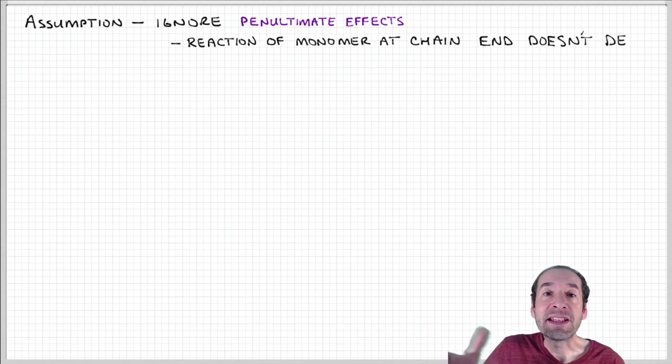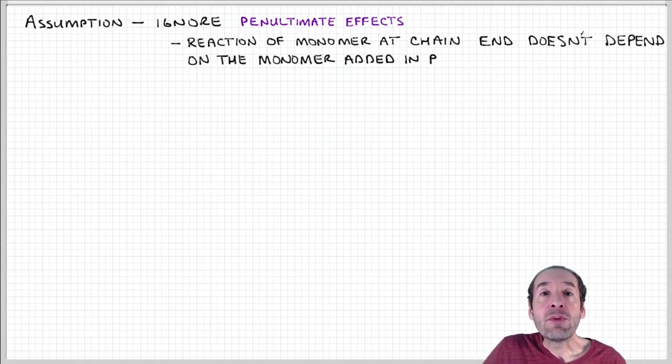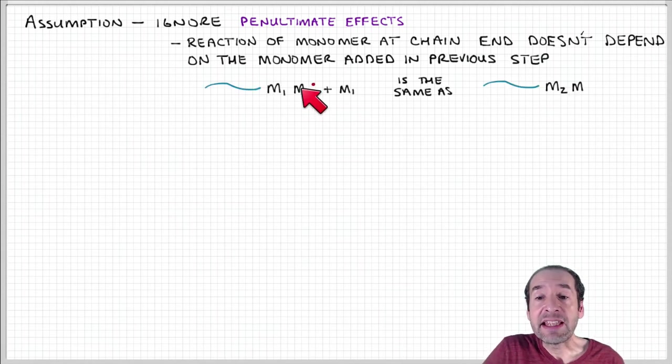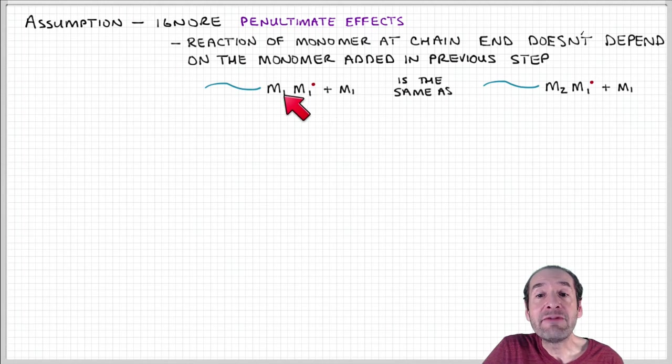Penultimate means the second to the last component. Basically what we're saying is that what happens to the active site at the end of the chain is not influenced by whatever the monomer unit was prior to that on the polymer chain.